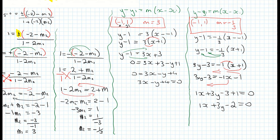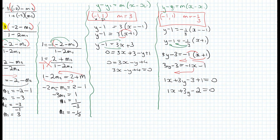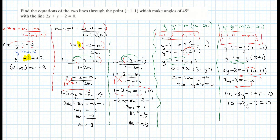To recap, the question asked us to find two equations of lines through the point which make an angle of 45 degrees. The two equations are 3x minus y plus 4 equals 0, and x plus 3y minus 2 equals 0. Now let's have a quick look at what that looks like on a graph.